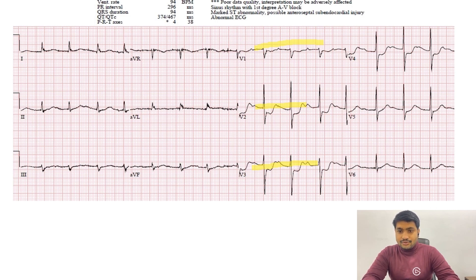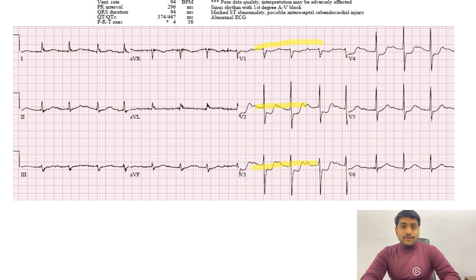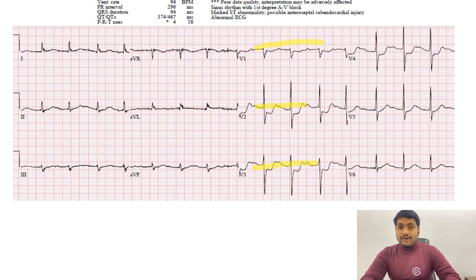We see this in two contiguous leads and we call this posterior wall MI. Now the point to note here is that individual posterior wall MI is very rare because 80 to 85 percent of the human population receive the posterior supply of the heart from the right coronary artery.